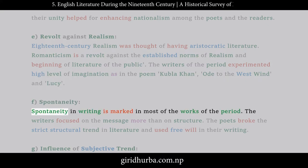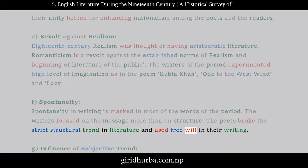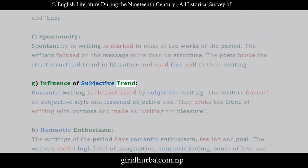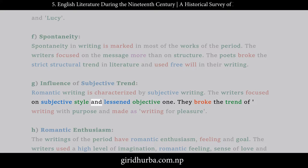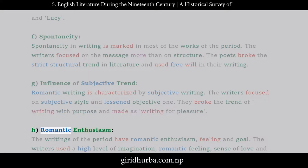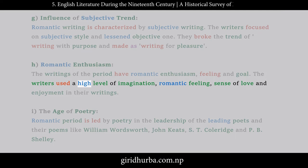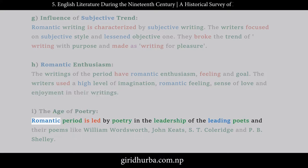(f) Spontaneity — spontaneity in writing is marked in most works of the period; writers focused on the message more than on structure, breaking strict structural trends and using free will. (g) Influence of subjective trend — Romantic writing is characterized by subjective writing; writers focused on subjective style and lessened objective writing, making it writing for pleasure. (h) Romantic enthusiasm — the writings have romantic enthusiasm, feeling, and goal, with a high level of imagination, romantic feeling, sense of love, and enjoyment. (i) The age of poetry — the Romantic period is led by poetry under the leadership of William Wordsworth, John Keats, S.T. Coleridge, and P.B. Shelley.